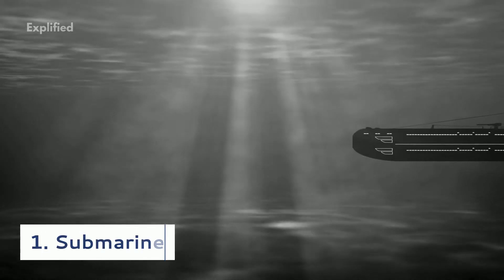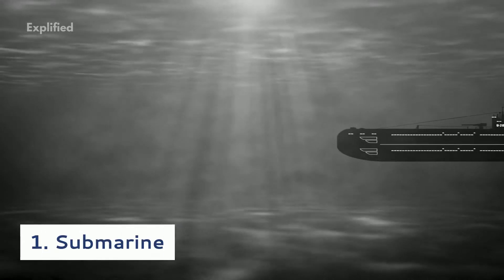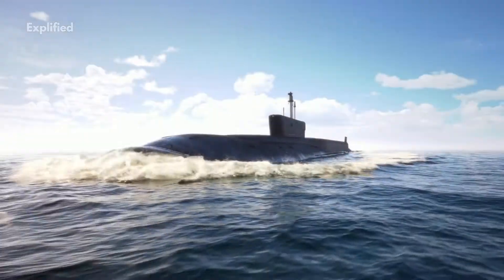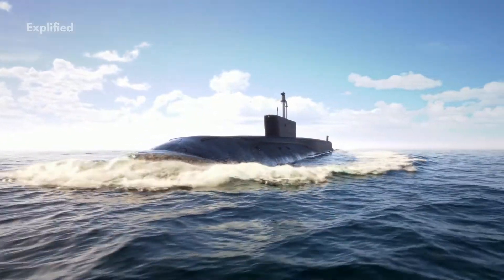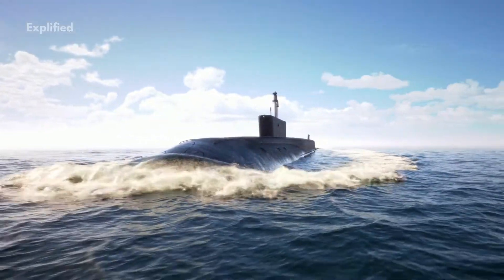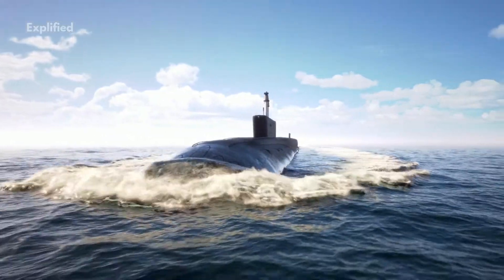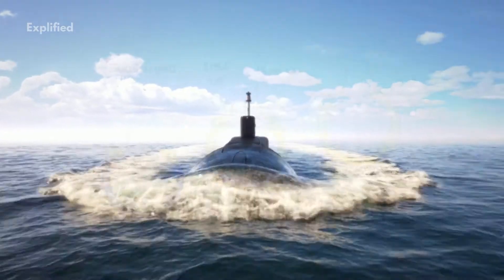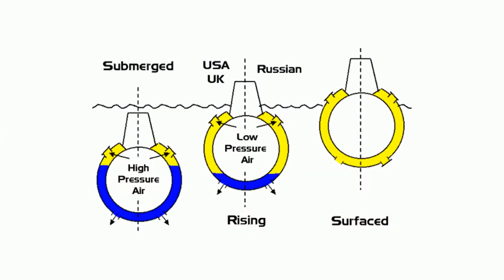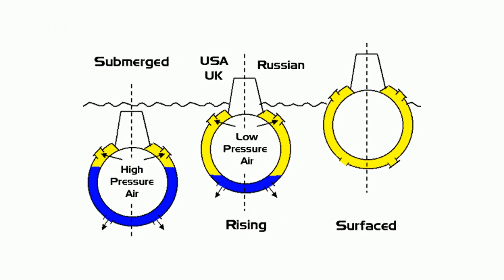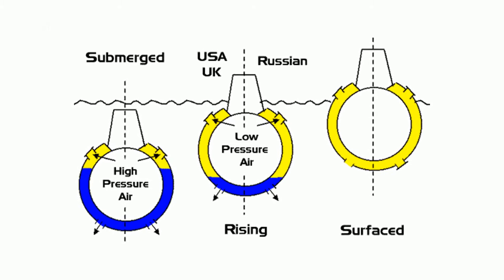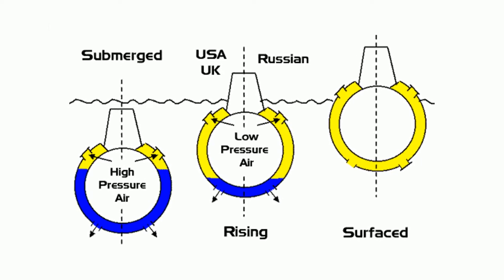Have you ever wondered why submarines are always underwater? This is possible because they have a component called a ballast tank which allows water to enter, making the submarine stay in its position underwater, as the weight of the submarine becomes greater than the buoyant force.